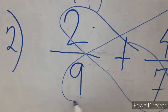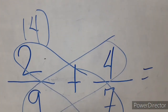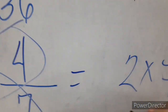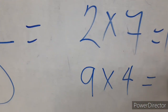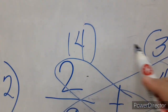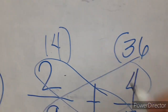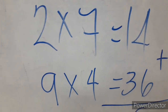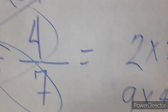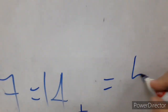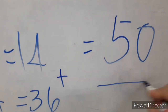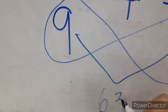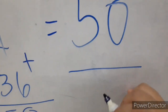Next, 9 times 4. 9 times 4 is 36. So let's put 36. Next, 14 plus 36 is 50. So our new numerator is 50. Our denominator is 9 times 7, which is 63.